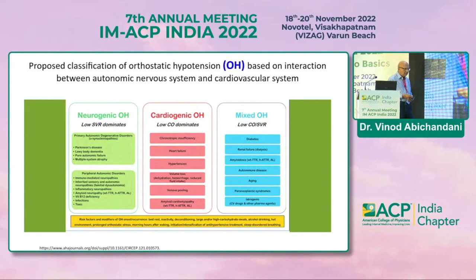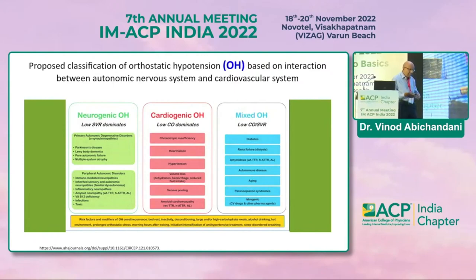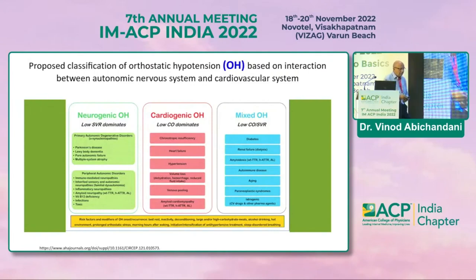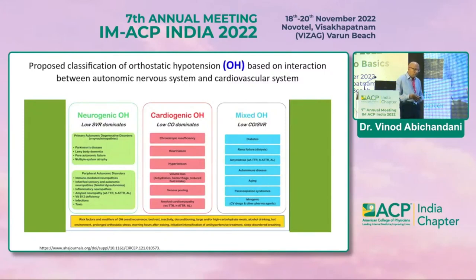In cardiogenic OH, low cardiac output dominates, and we are likely to encounter persons with chronic chronotropic insufficiency, heart failure, hypertension, volume loss secondary to dehydration, hemorrhage, reduced fluid intake, venous pooling, and amyloid cardiomyopathy. A mixed picture exists where both low cardiac output and low systemic vascular resistance are encountered.